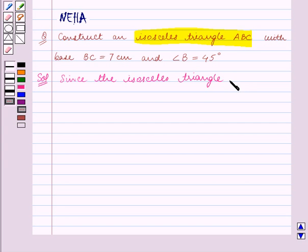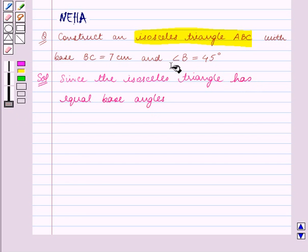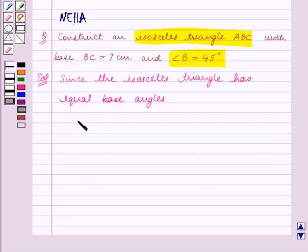Since the isosceles triangle has equal base angles and we are given that one of the base angles, angle B, is equal to 45 degrees, therefore angle B is equal to angle C which is equal to 45 degrees.